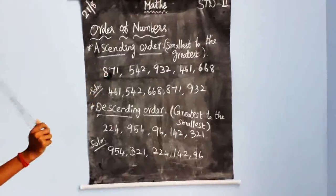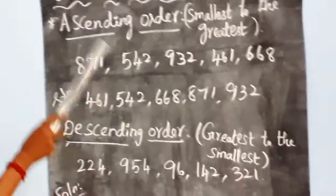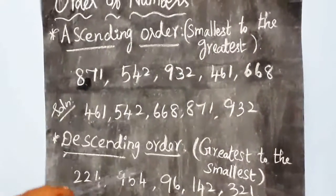Order of Numbers has two types. First type is ascending order. Second is descending order.